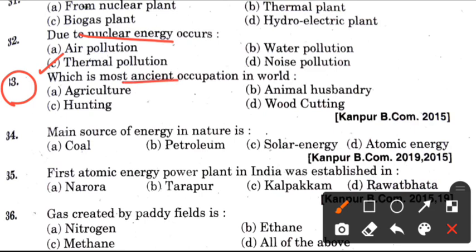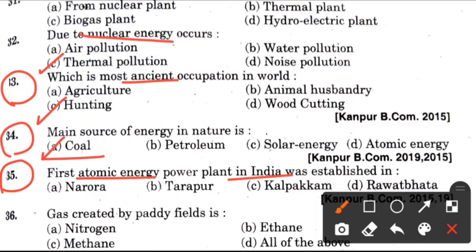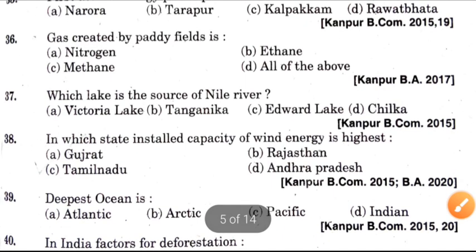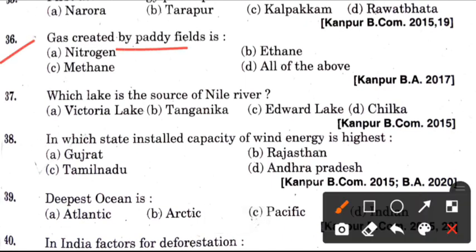Thirty-third question: Which is the most ancient occupation in the world? Answer is C, which is hunting. Thirty-fourth question: Main source of energy in nature is? Answer is A, which is coal. Thirty-fifth question: First atomic energy power plant in India was established in? Answer is B, which is Tarapur. Thirty-sixth question: Gas created by paddy fields is? Answer is C, which is methane. Next question: Which lake is the source of Nile River? Answer is A, which is Victoria Lake.